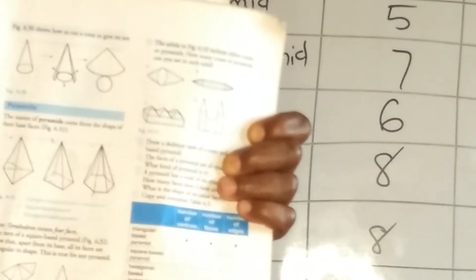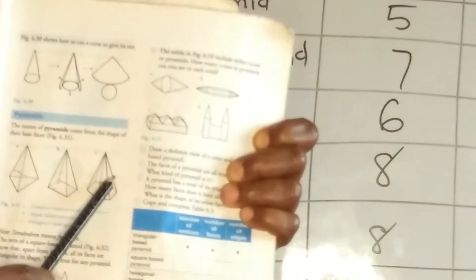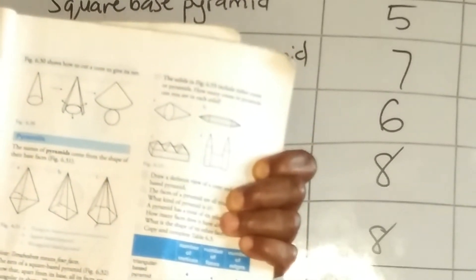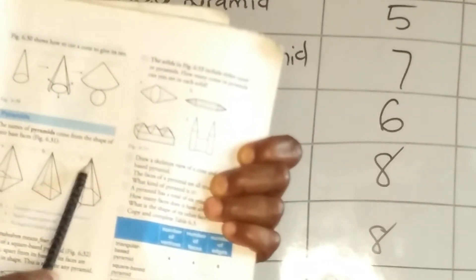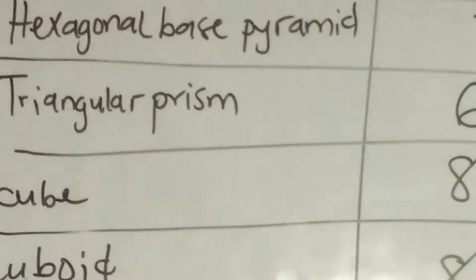Now let's look at the number of faces the hexagonal-based pyramid has. The base is one face, then the other faces: two, three, four, five, six, seven — it has seven faces. Now the number of edges. Let's count the edges: one, two, three, four, five, six, seven, eight, nine, ten, eleven, twelve — exactly twelve edges. Those are the figures for the hexagonal-based pyramid.